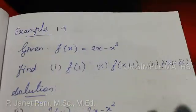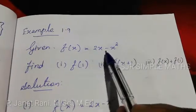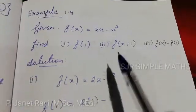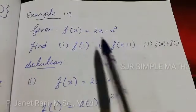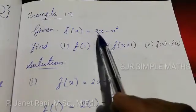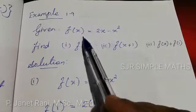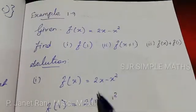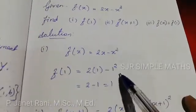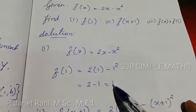Now Example 1.9. Given f(x) = 2x - x², find f(1), f(x+1), and f(x) + f(1). For f(1): substitute x = 1. f(1) = 2(1) - 1² = 2 - 1 = 1.